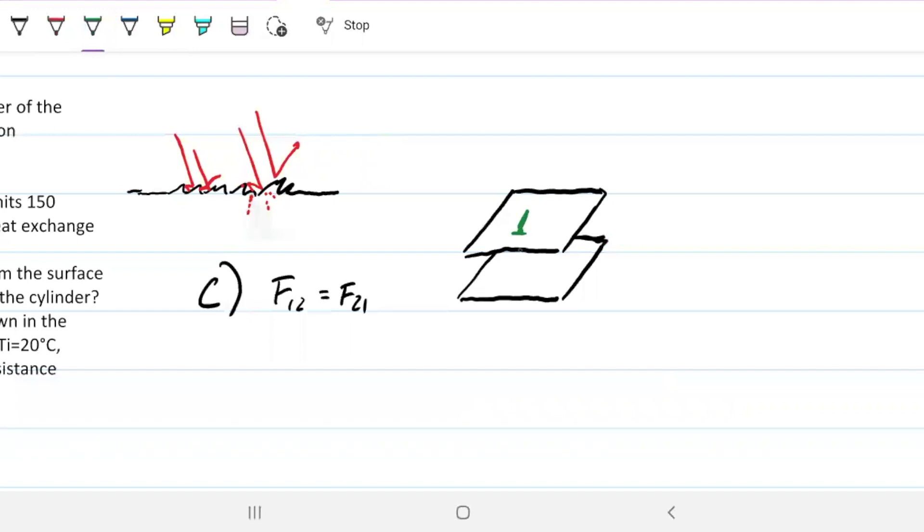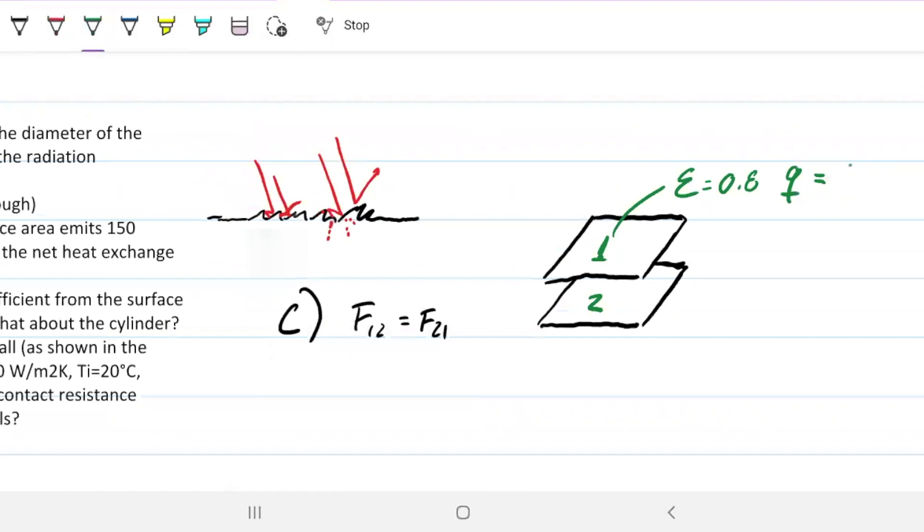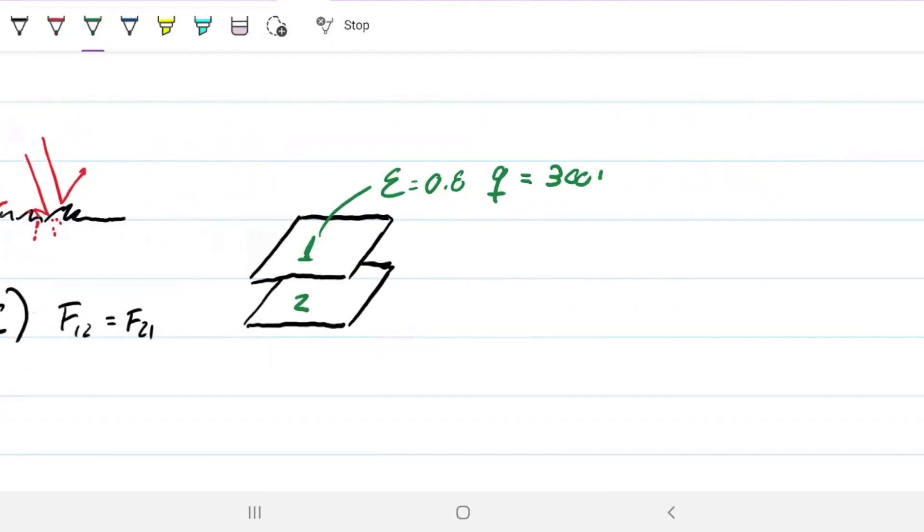And let's give them a name. So I'm going to call this one 1 and 2. 1 has an emissivity of 0.8 and a Q of 300, 300 watts per meter square. And 2 has an emissivity of 0.4 and the Q of 150.